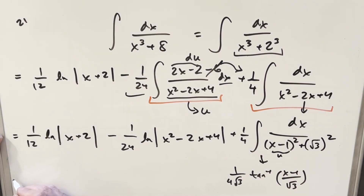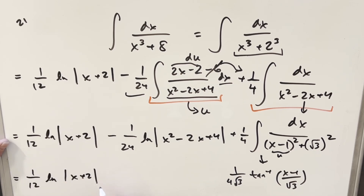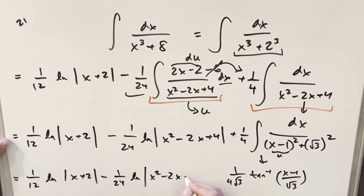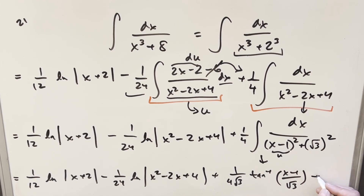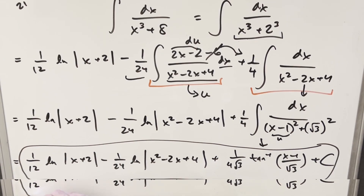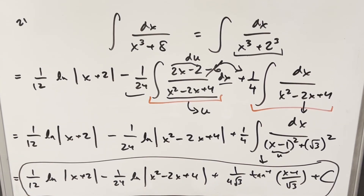The final solution is: 1 over 12 times natural log of absolute value of x plus 2, minus 1 over 24 times natural log of absolute value of x squared minus 2x plus 4, plus 1 over 4 root 3 times arctan of x minus 1 over root 3, plus C. Partial fractions tends to take a little more time, but it works out. Thanks everyone for watching — please like and subscribe, have a great day.